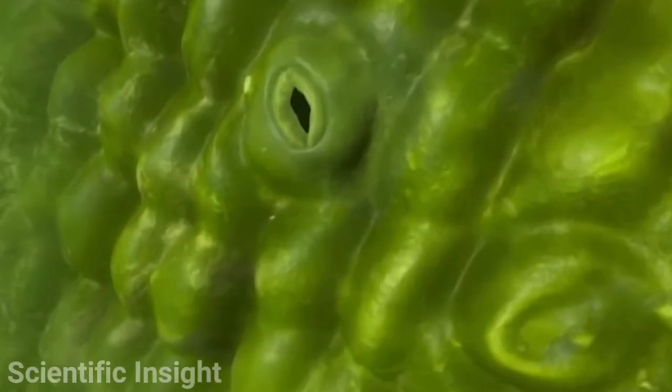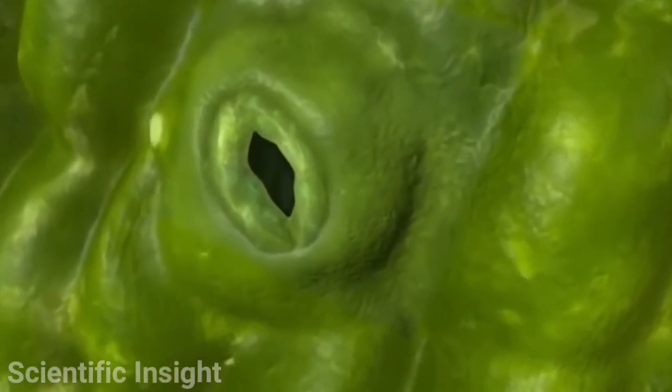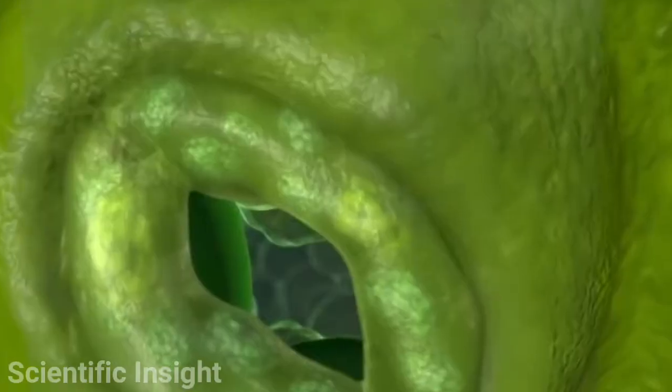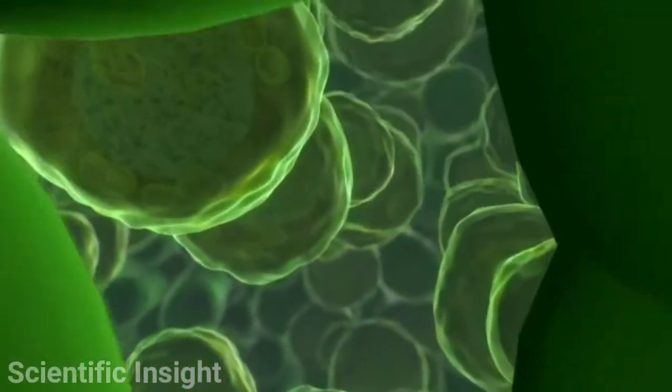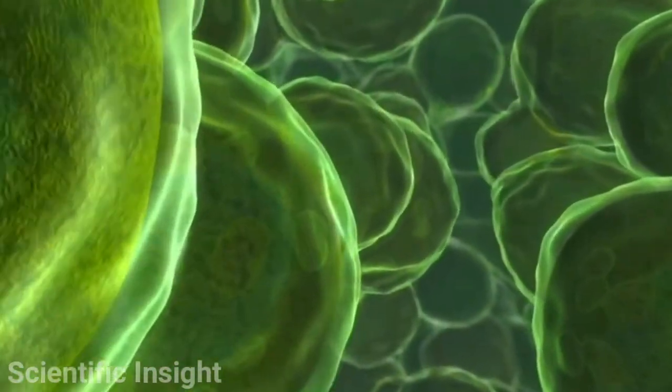As we enter the interior of the leaf, we see many individual palisade cells. These cells are where photosynthesis takes place; they are translucent to allow sunlight to enter.